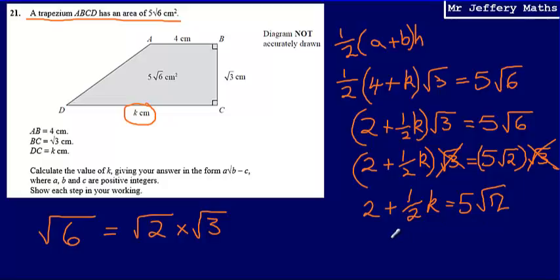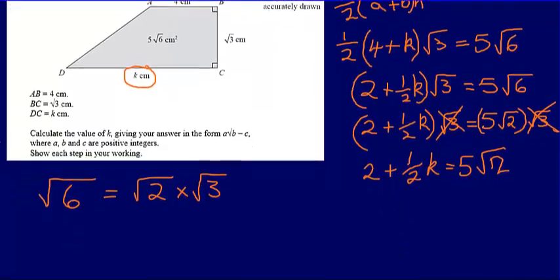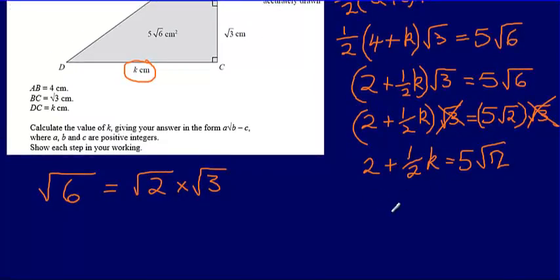So now all that's left for me to do is to rearrange this and make K the subject. We're asked to find the value of K. So next thing I'm going to do here, subtract 2 from both sides. That's going to give me half K is equal to 5 root 2 minus 2.